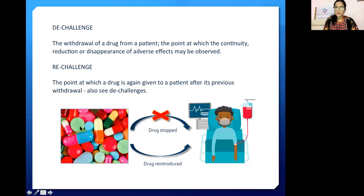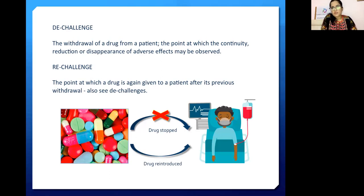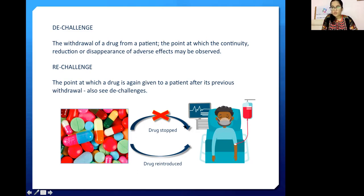Another term commonly used in pharmacovigilance is de-challenge and re-challenge. De-challenge means the withdrawal of a drug from a patient, at which point the continuation, reduction, or disappearance of the adverse event may be observed. For example, if a rash appears and we stop the specific drug, we observe whether the rash disappears, is aggravated, or stays the same — that is de-challenge. Re-challenge is when the drug is given again to the patient after its previous withdrawal, to see whether the same adverse reaction recurs.